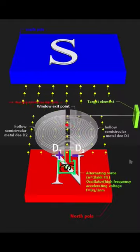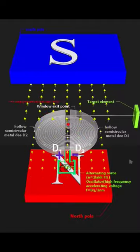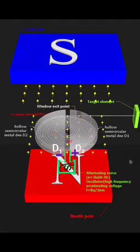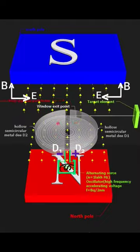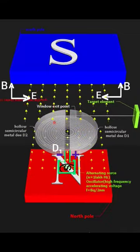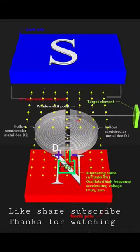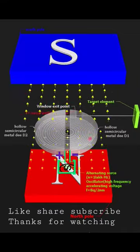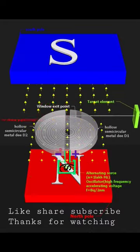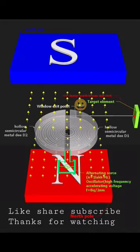The varying electric field accelerates the charged particle between the two ds. Both magnetic and electric fields are known as cross-fields because they act perpendicular to each other. The charged particle accelerates to very high energy and escapes through an exit window and hits the target material.